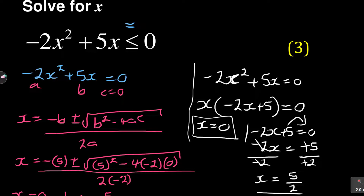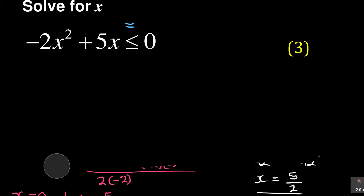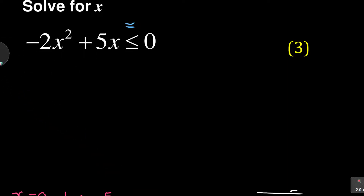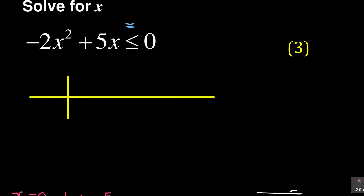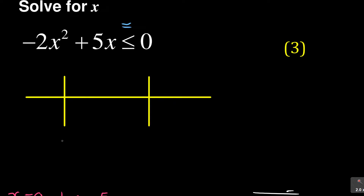Now very important — whatever method we used, I need to erase this because what I'm interested in is the final answer. The critical values are fine — we have 0 and 5 over 2. Now I'm going to draw my number line to interpret what we have and what it means. I've got my critical values: x equals 0 and 5 over 2, or 2.5. You can write 2.5 so you can understand it clearly.